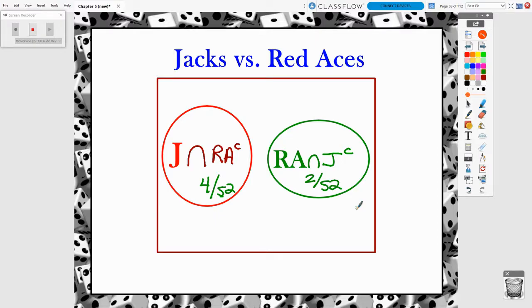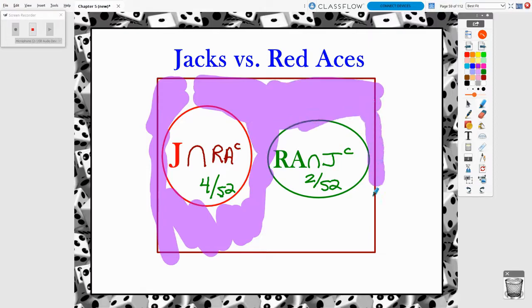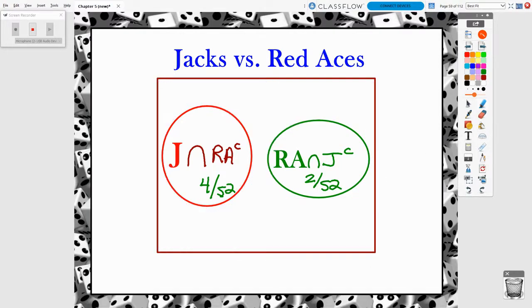Where are the other cards at that aren't jacks and are not red aces? That would represent what's inside the box but outside of our two bubbles. All of this leftover region represents the other 46 cards that are not jacks, jack complement, and red ace complement, not red aces. And remember, there are 46 out of 52 of those cards. How'd I get 46 out of 52 so quickly? I knew there were four and two here, four plus two makes six. And if I subtract six cards from 52 cards altogether, using the complement rule, I get 46 out of 52.